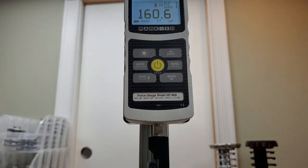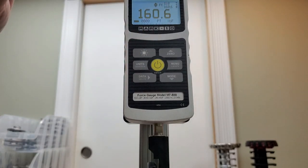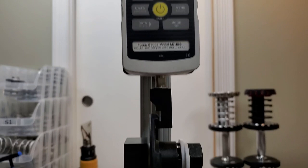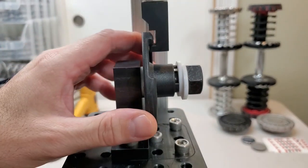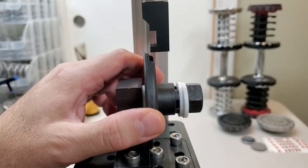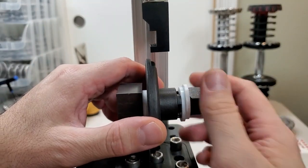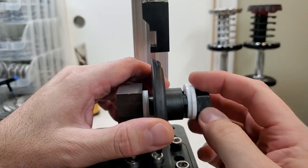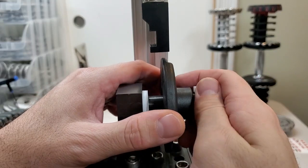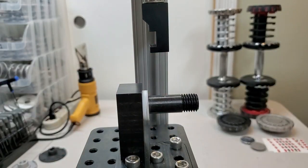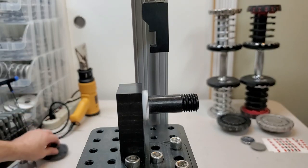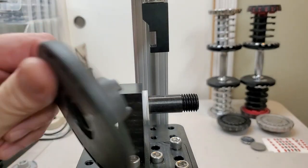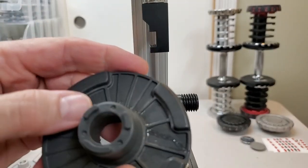160 pound force on this. We're going to pop this out. Take this off. Grab our compromised, previously glued, Series 1.